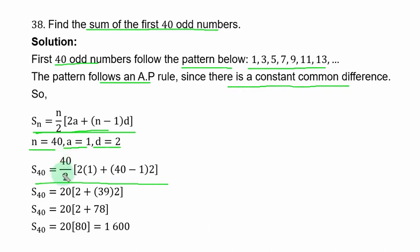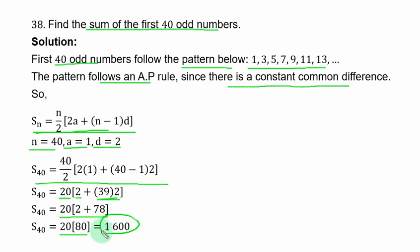Divide 40 by 2 to get 20. Then 2 times 1 minus 1 gives 1, and 40 minus 1 is 39 times 2. Multiply first before adding, and you have 1600 as the sum of the first 40 odd numbers.